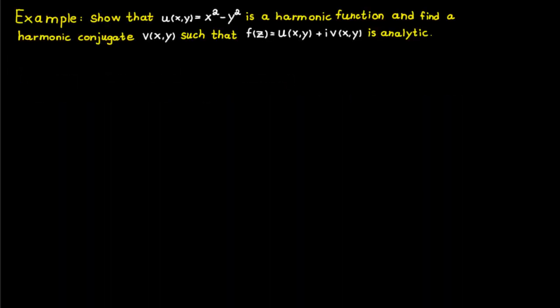Let's continue with the example. We want to show that the function u, which is equal to x squared minus y squared, is a harmonic function. Then we have to find a harmonic conjugate v to this function such that the function f is analytic.